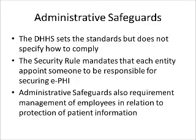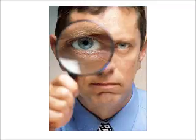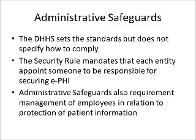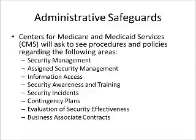The Department of Health and Human Services sets the standards but does not specify how to comply. The security rule mandates that each entity appoint someone to be responsible for securing electronic protected health information — that's the security officer. Administrative safeguards also require the management of employees in relation to protected health information, where people who have access must have a username and a password. The Centers for Medicare and Medicaid Services, or CMS, will ask to see procedures and policies regarding: security management, assigned security management, information access, security awareness and training, security incidents, contingency plans, evaluation of security effectiveness, and business associate contracts.